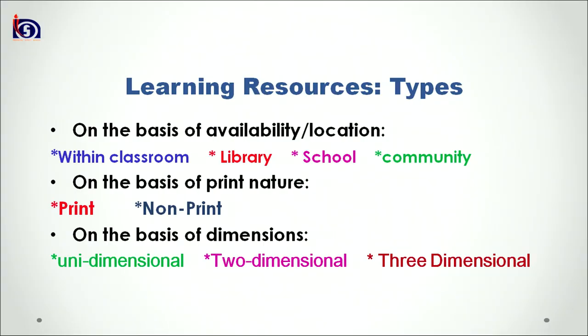There are different categorizations of learning resources. On the basis of availability and location, there are four categories: resources available in classrooms, in the school, in the library, and in the community. On the basis of print and non-print nature, there are two categories: print format (generally called visual resources) and non-print format (generally called digital resources). On the basis of dimension, there are three categories: unidimensional, two-dimensional, and three-dimensional learning resources.